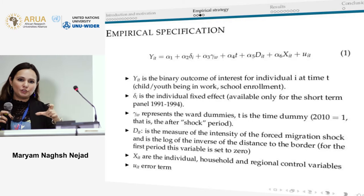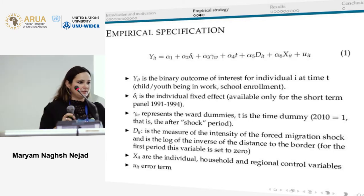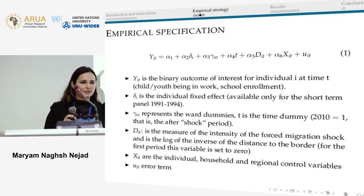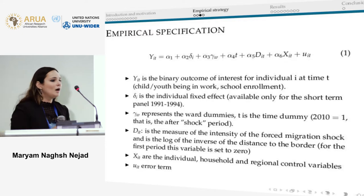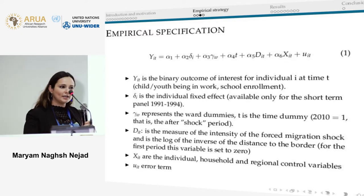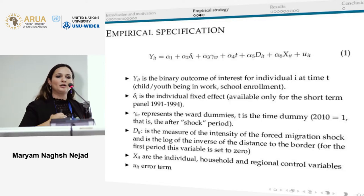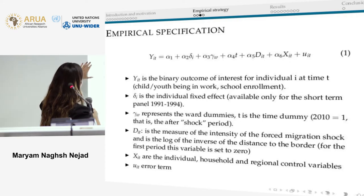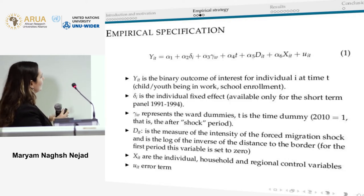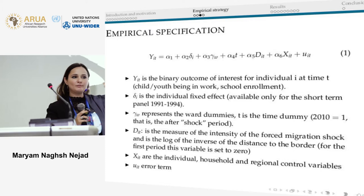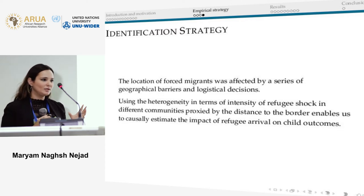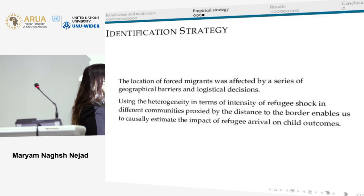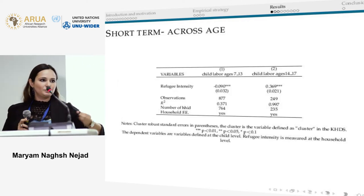Our empirical strategy differs between the short and long term. In the short term we can follow the same children right after the shock using the panel. In the longer term — ten years later — those children are no longer of school age, so we use a difference-in-differences approach within villages. We use a refugee intensity variable, which is the inverse of distance to the border. We also check this against distance to the refugee camps and the results remain similar.